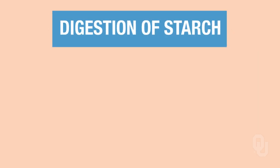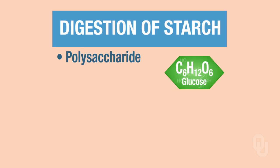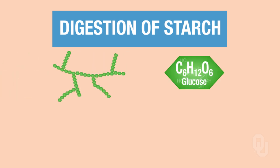So how are we going to go about digesting these disaccharides and polysaccharides so that we can absorb the resulting monosaccharide? Let's look at digestion of starch. Starch is a polysaccharide that consists of glucose monomers—each one of these green structures is a glucose subunit or monomer. Since starch is a polysaccharide, we cannot absorb it into the blood, so we have to be able to digest it.